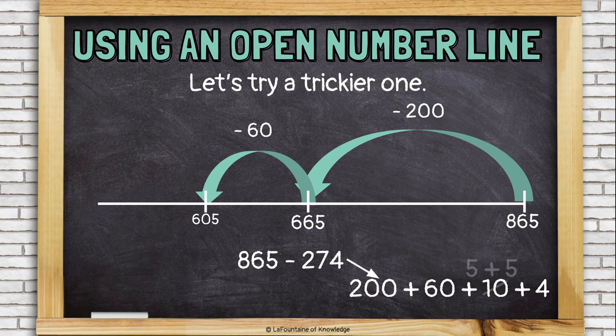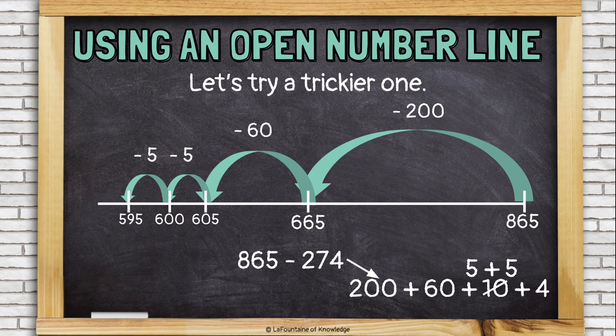And then I have to take away 10. That's not very easy either. Let's take away 5. I'm at 600. And then another 5. Now I'm at 595.